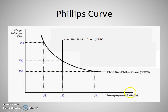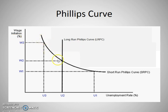It's really important to make sure that you have the labeling correct along the horizontal and vertical axis. When we talk about the Phillips curve, the horizontal axis is the unemployment rate, measured as a percentage, and the vertical axis is the inflation rate, measured as a percentage change. There are two curves: the short run Phillips curve (SRPC), which is downward sloping, and the long run Phillips curve (LRPC), which is vertical.